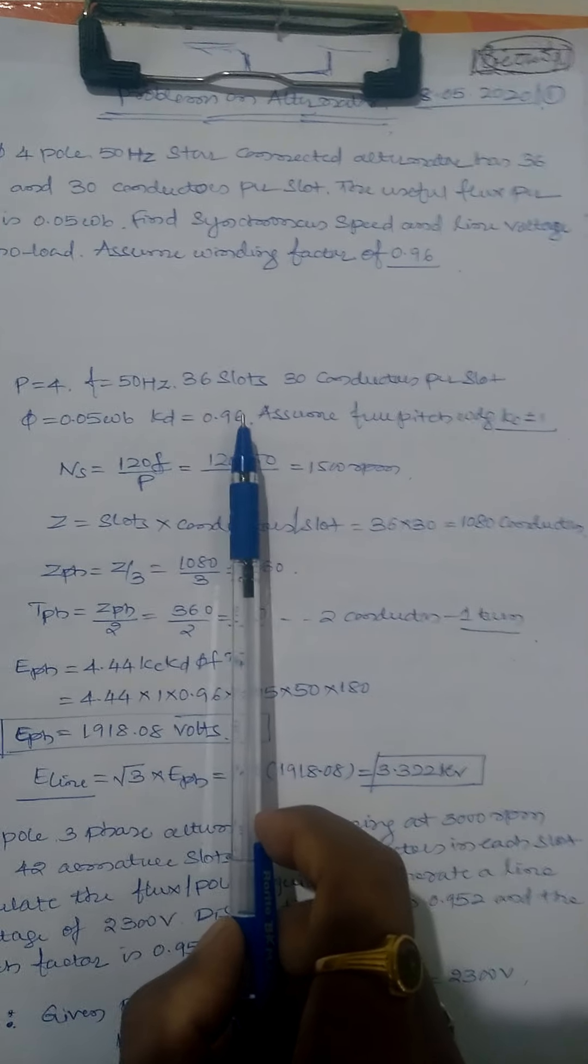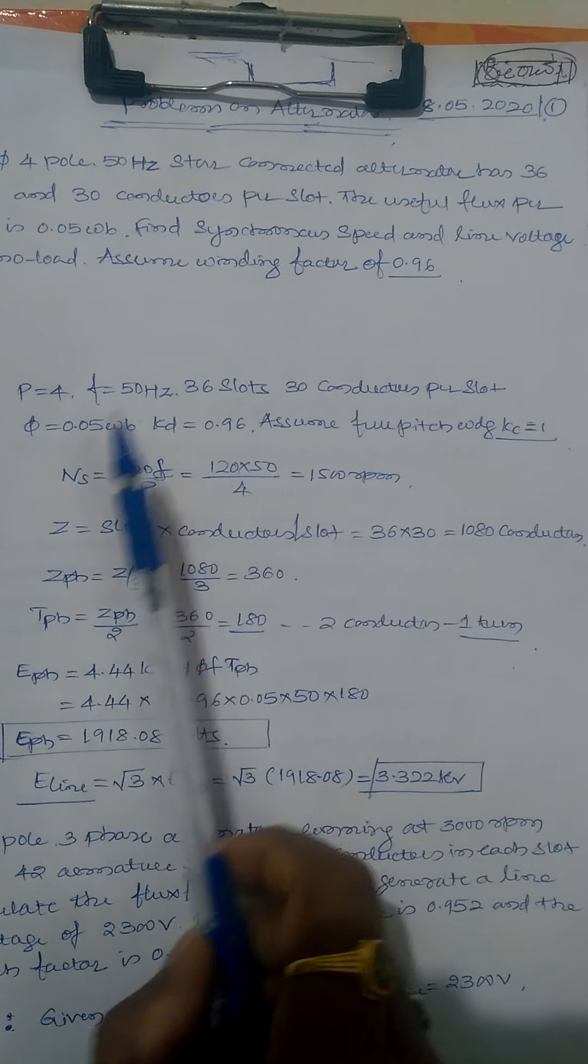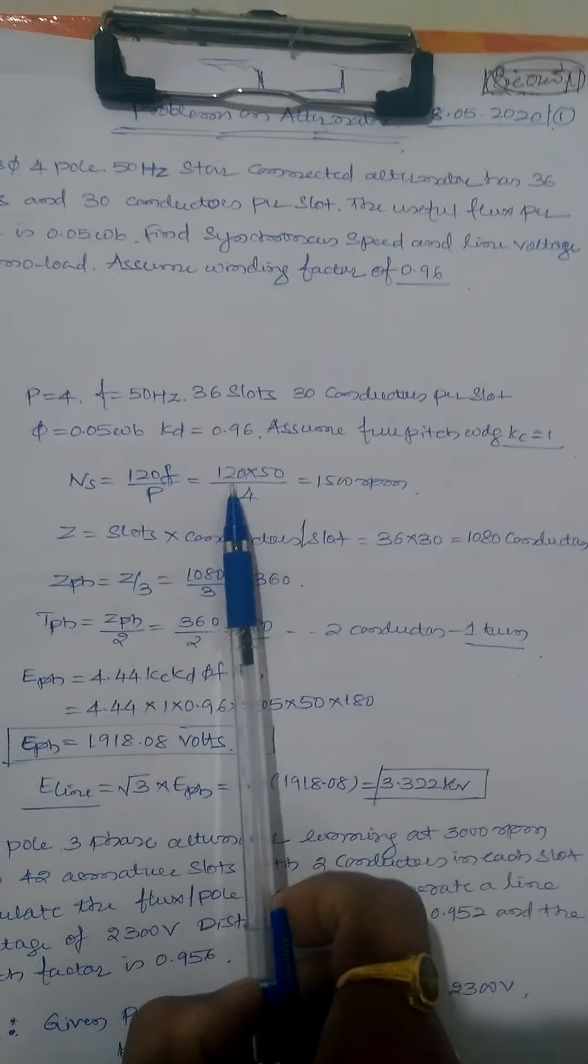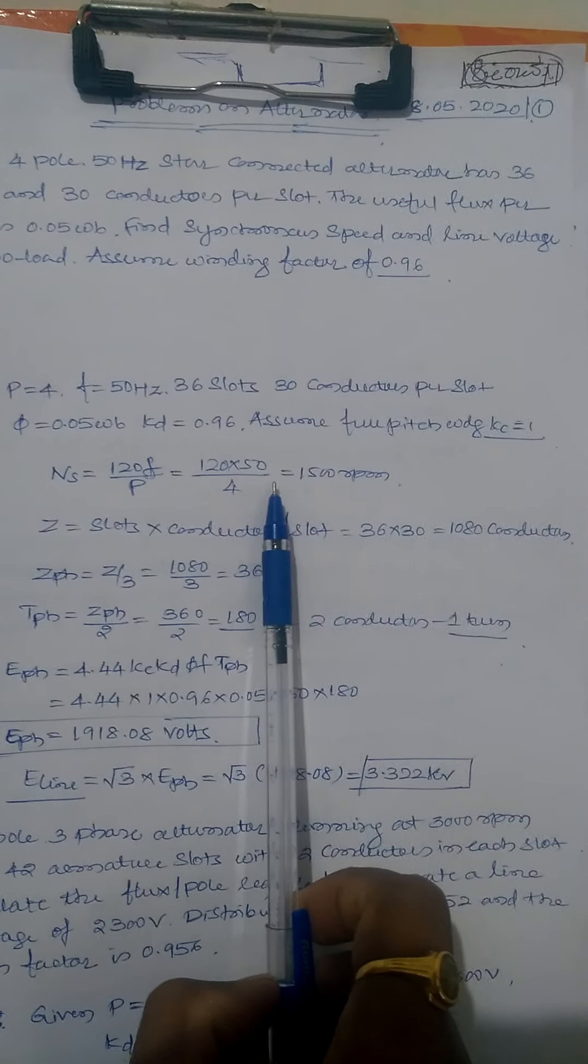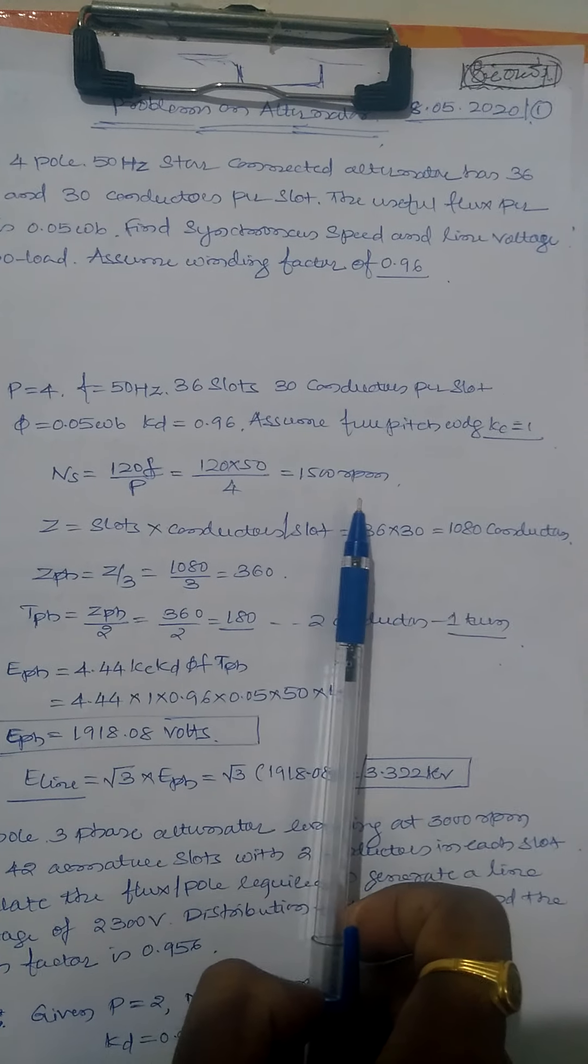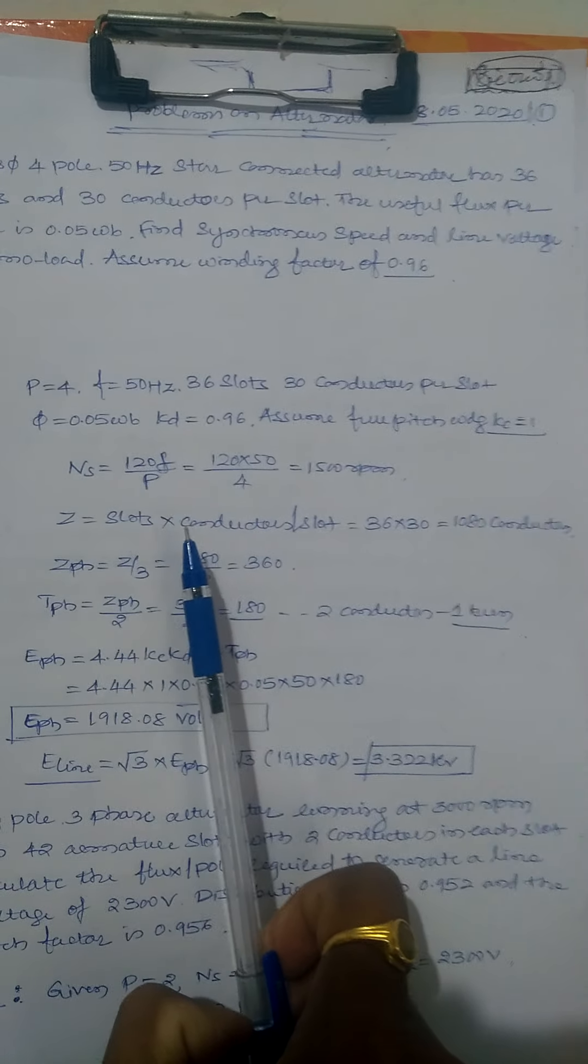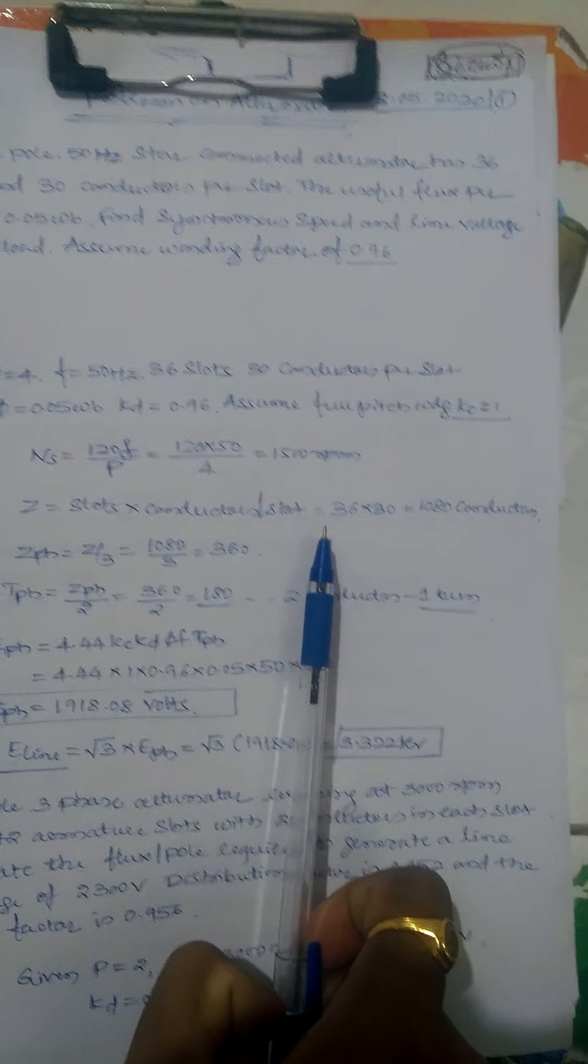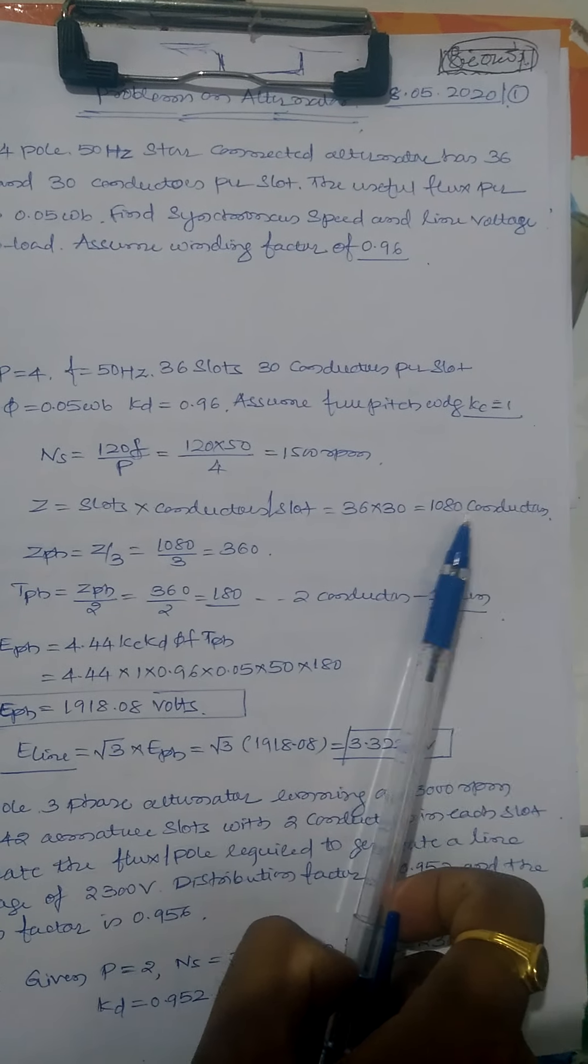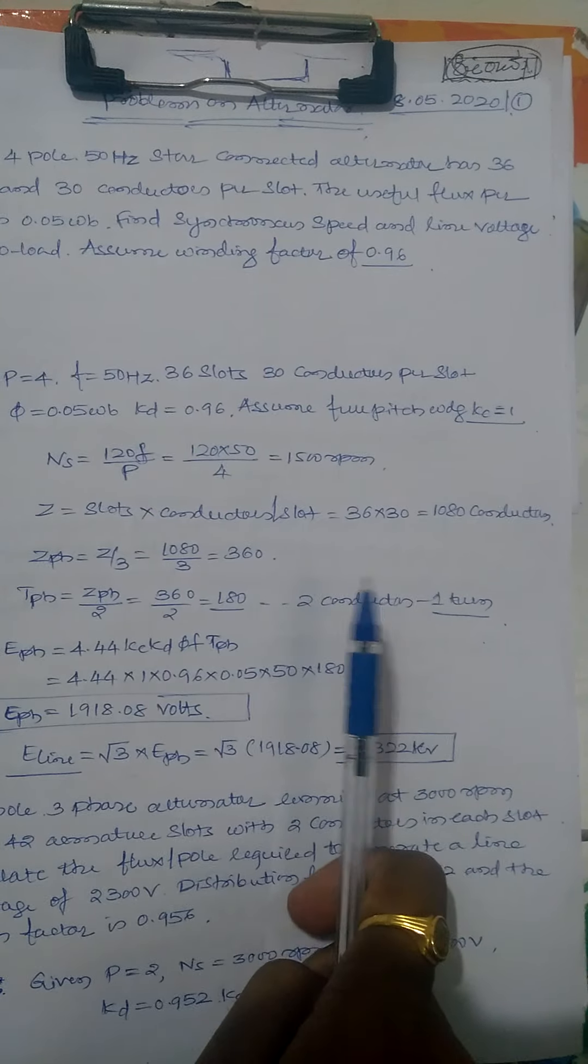First, calculate NS. That is 120 F by P. Just putting F value and P value, you get NS equals 1500 rpm. Next, calculate Z. Z equals slots into conductors per slot: 36 into 30, that is 1080 conductors.